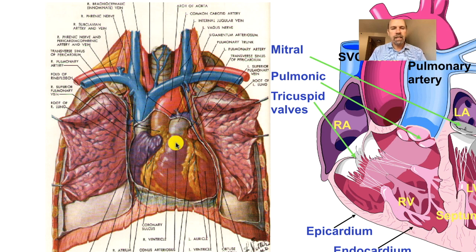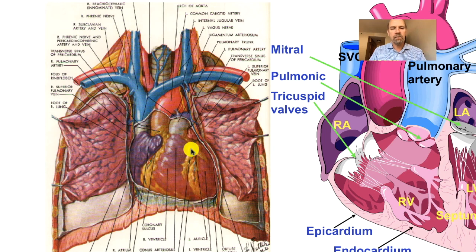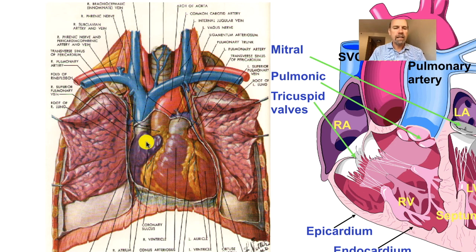Here you see the outflow tract of the right ventricle — this is the right ventricular side of the heart. Here on the other side of this left anterior descending coronary artery is the left ventricular chamber. Here you can see the right atrium and up here a little bit of the left atrium. This is the pulmonary artery and this is the aorta.